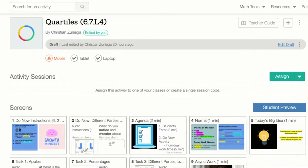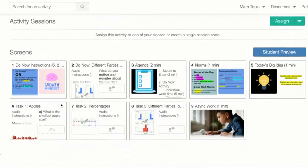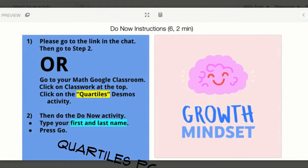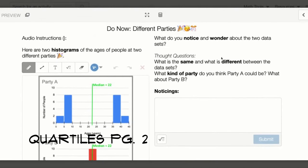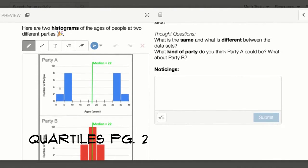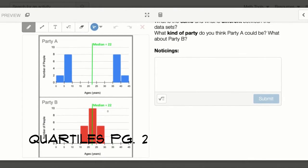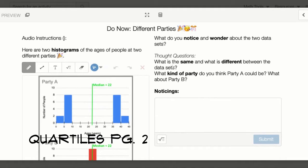This is the quartile 6.7.L4 assignment. We're going to start with the do now. The title is different parties. Here are two histograms below of the ages of people at two different parties. That's why you see the two histograms with two parties.